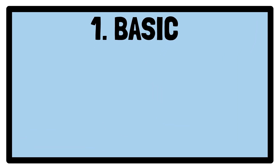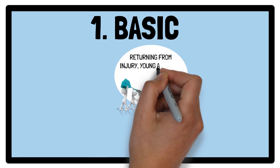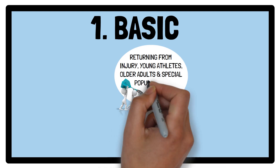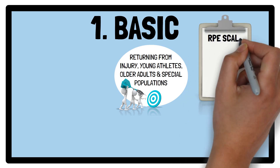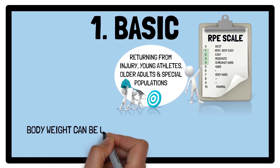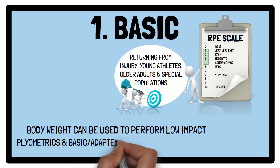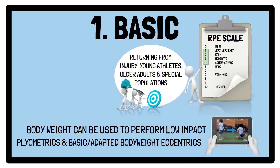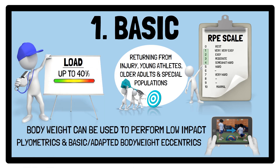Low-intensity basic eccentric exercise is recommended for athletes returning from injury, young athletes, older adults and special populations, for example those undertaking cardiac rehabilitation. The intensity at this level is suggested to be 4 out of 10 on the rating of perceived exertion scale, with body weight being used to perform low-impact plyometrics such as pogo variations and basic or adapted body weight eccentrics. If load is used, this is suggested to be up to 40% of the concentric phase 1RM.